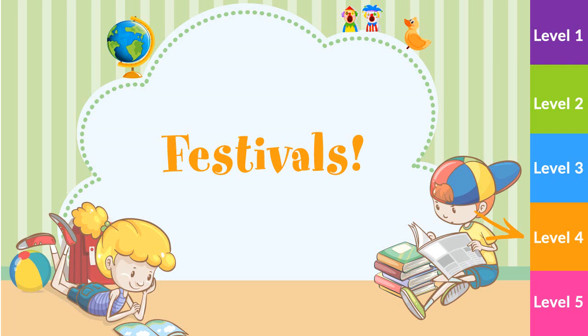11. B. There are 14 bats. 12. C. There are 19 spiders. 11. B. The jack-o-lanterns are orange. 8. A. The owl is on the tree.